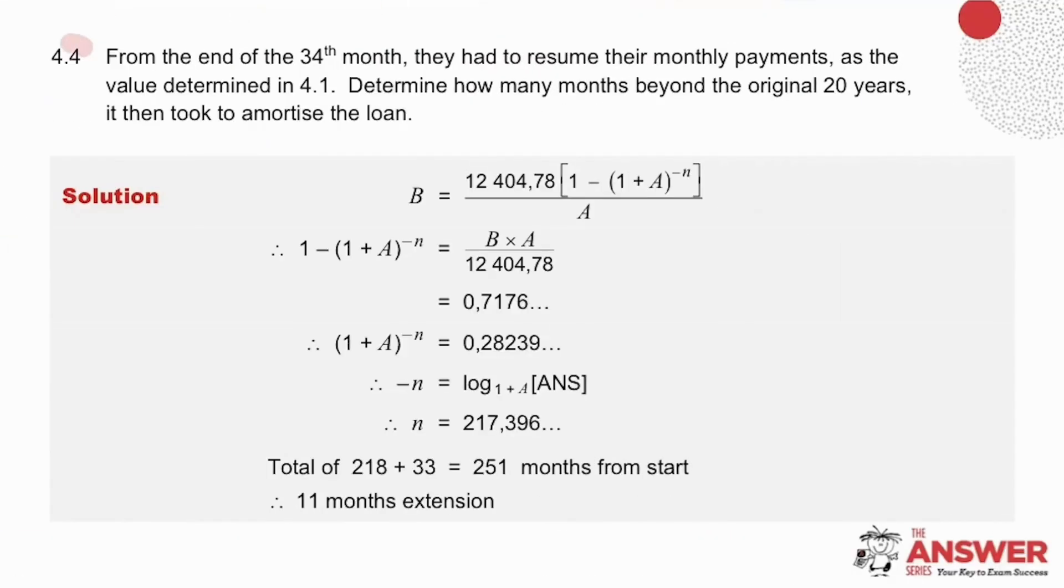Question 4.4 says that from the 34th month the family needs to resume their monthly payments and it is asking how many months beyond the original 20 years it will take to pay off the loan. So let's first calculate how many payments need to be made into the future from the 34th month until the loan is paid off. So solving for N using the present value formula.